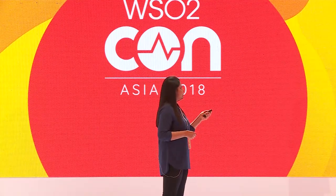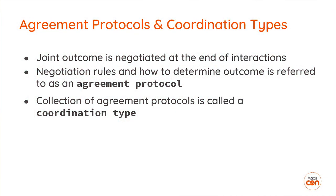What we now have is a sphere of control where we have infected several microservices all registered with the same coordinator. We then need a mechanism to communicate between the initiator, coordinator, and participants. At the end of business execution they need to reach a conclusion — whether to commit or abort. There is no central party deciding on behalf of the microservices; the microservices themselves come to that outcome, called the joint outcome. The rules for exchanging protocol messages are called agreement protocols, and a set of agreement protocols is called a coordination type.